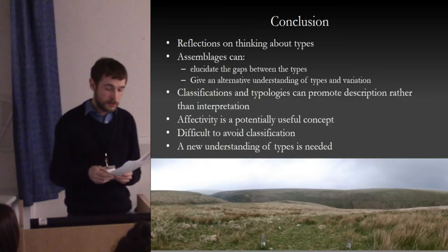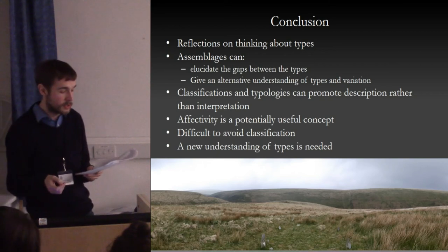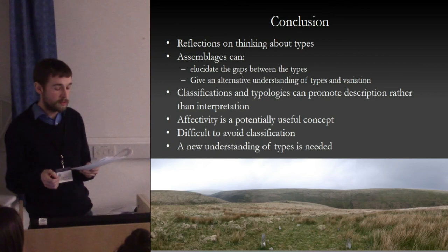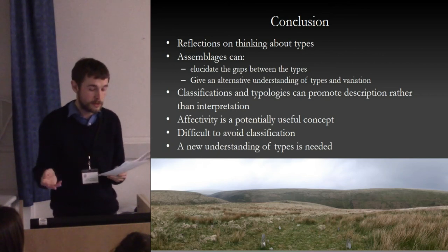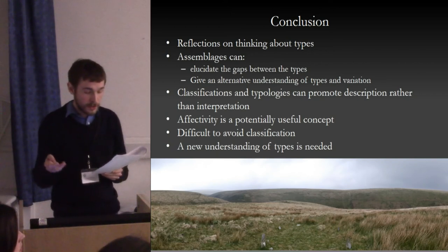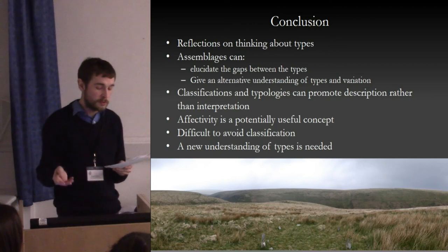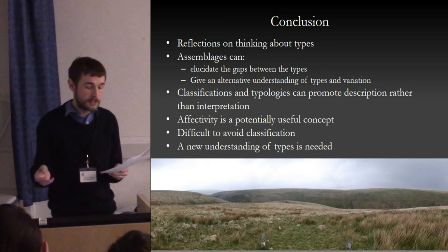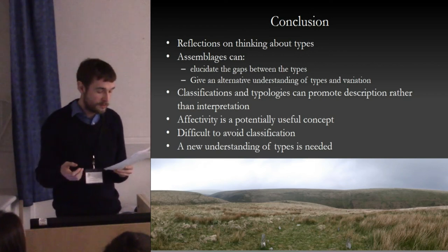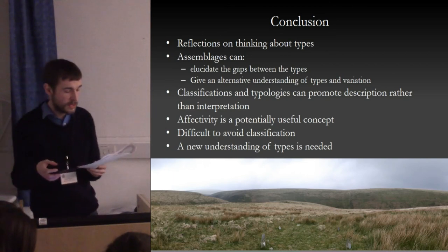To conclude: this paper has argued that there is a real need for archaeologists to formulate understandings of the emergence and persistence of forms or types that is compatible with relational approaches, rather than unconsciously using older classifications without engaging with them more fully. I have argued that assemblage theory can provide a guiding framework that allows us to question and elucidate what is happening between the types, as well as an alternative understanding of types and our classifications of things — such classifications can, although they don't always have to, stifle the development of interpretation in favour of description. I have shown that aspects of assemblage theory can provide an alternative understanding of types and variation, and finally I would argue that a new understanding of the type is needed which sees form not as a static fixed entity but that accounts more fully for the dynamic capacity of things to affect other things.